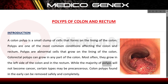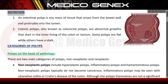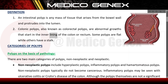While the majority of polyps will not become cancer, certain types may be precancerous. Colon polyps found early can be removed safely and completely. By definition, an intestinal polyp is any mass of tissue that arises from the bowel wall and protrudes into the lumen. Colonic polyps, also known as colorectal polyps, are abnormal growths that start in the inner lining of the colon or rectum. Some polyps are flat while others have a stalk.